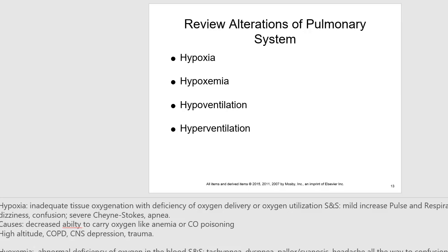Hypoventilation is not enough breathing to meet demand; it can be caused by trauma, pain, impaired nervous system regulation of breathing, or collapse of alveoli from severe atelectasis — which is the collapse of alveoli. Hyperventilation is an increase in respiratory rate causing excessive carbon dioxide loss. Signs and symptoms include shortness of breath, tachycardia, tachypnea, lightheadedness, decreased concentration, blurred vision, and disorientation.